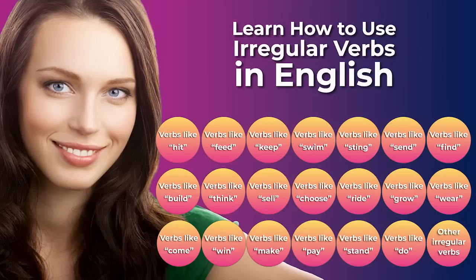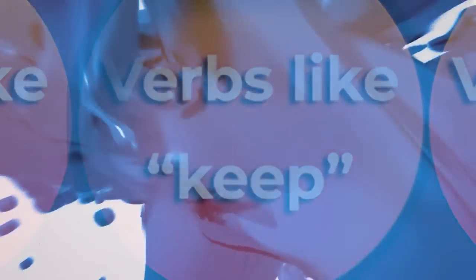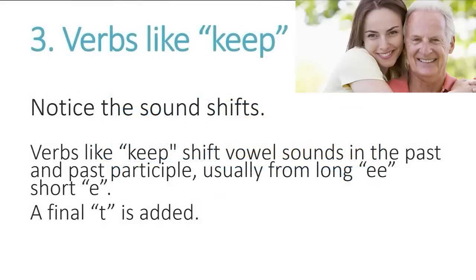These 21 short videos will help you quickly see and understand the relationships and patterns between various types of irregular verbs so that you can use them properly. The next verbs are verbs like 'keep.' Notice the sound shifts again. Verbs like 'keep' shift vowel sounds in the past and past participle, usually from long e to short e, similar to the ones we just did. The difference is, with these kinds of verbs, a final t is added.